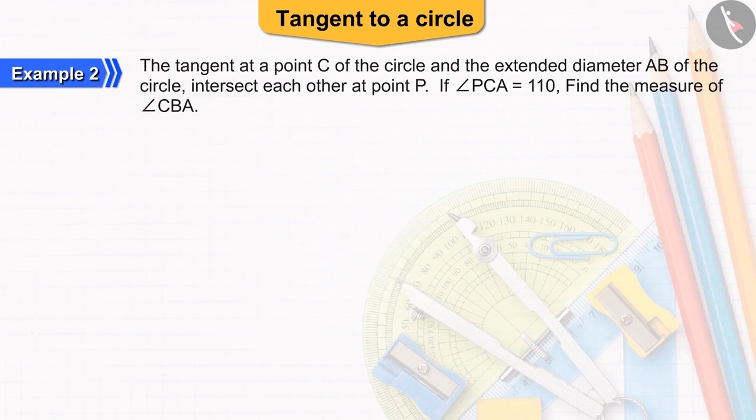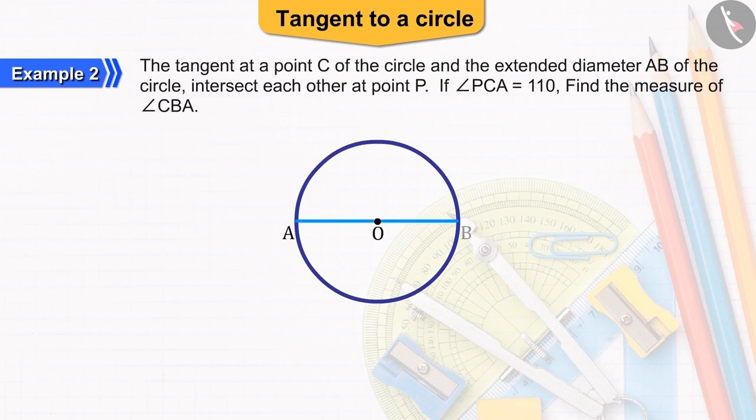Let us first draw a figure for this question. Suppose, there is a circle with centre O and diameter AB. On extending AB, it intersects the tangent formed at point C on the point P.